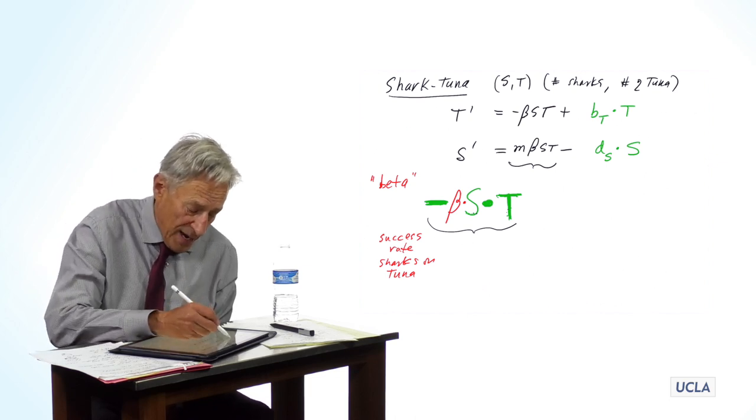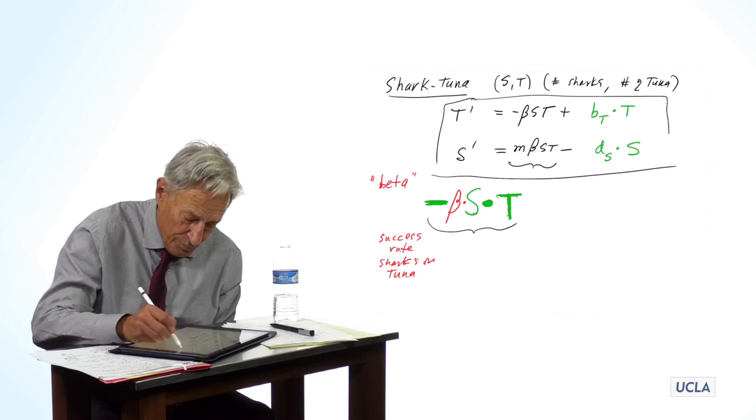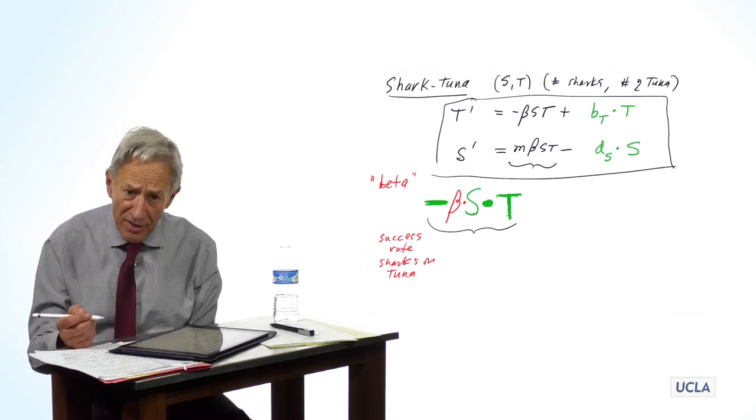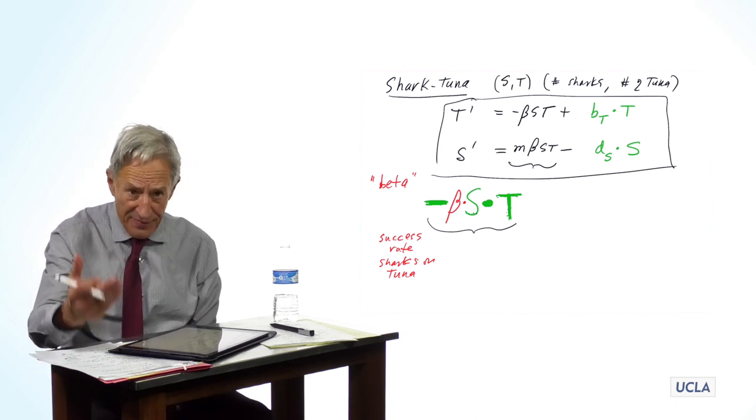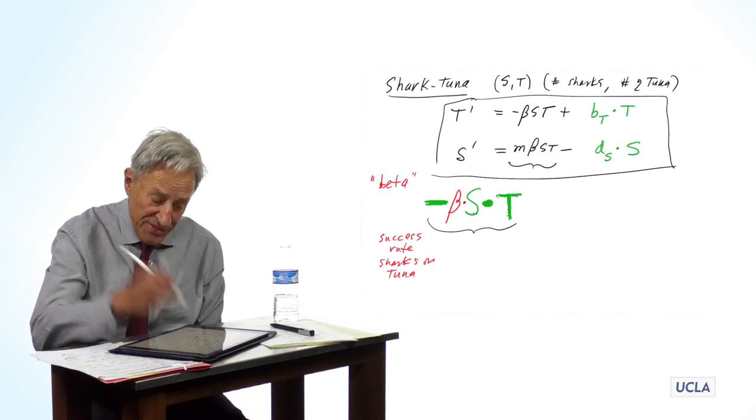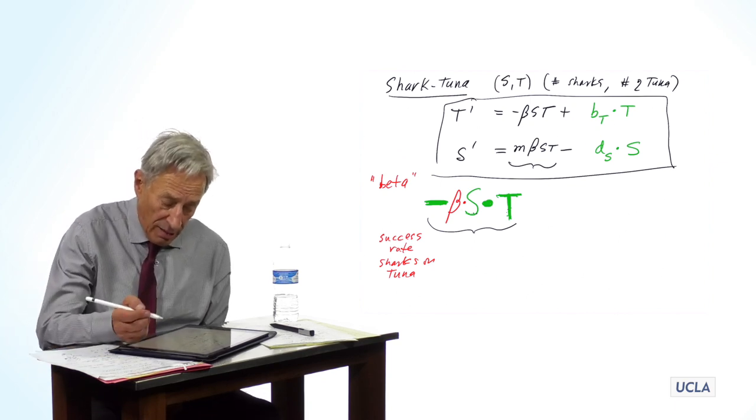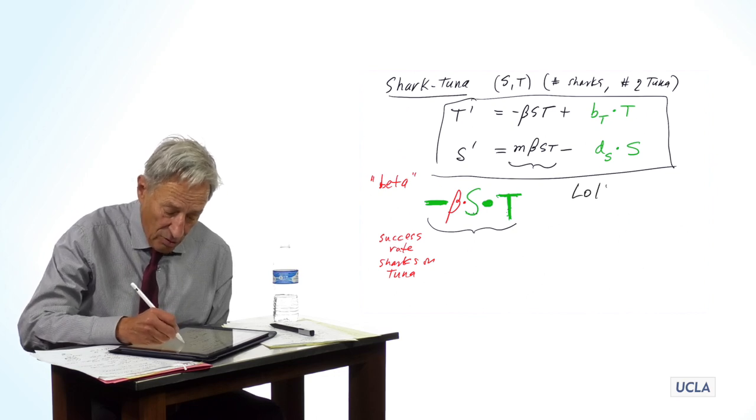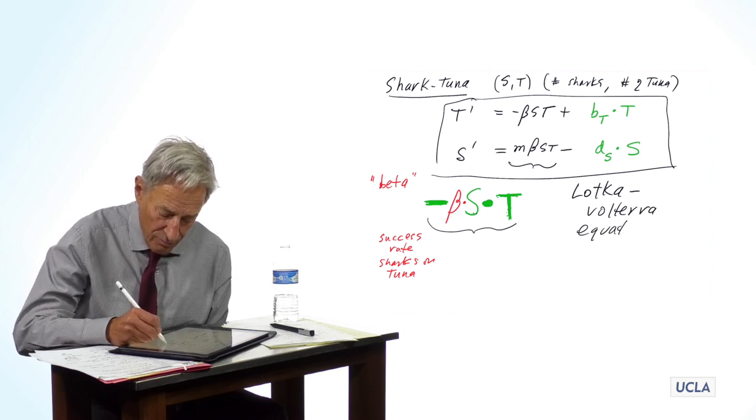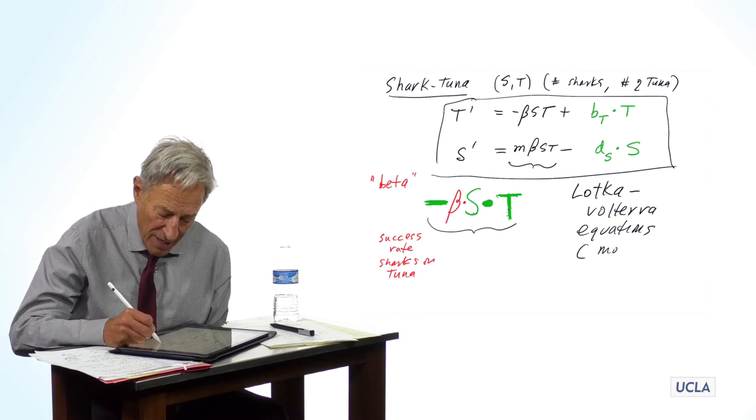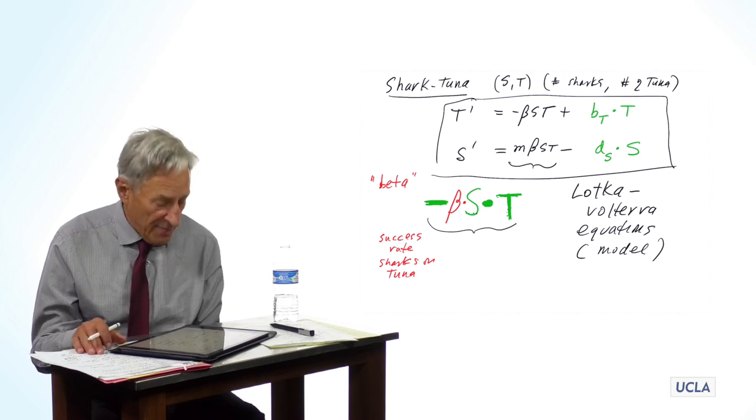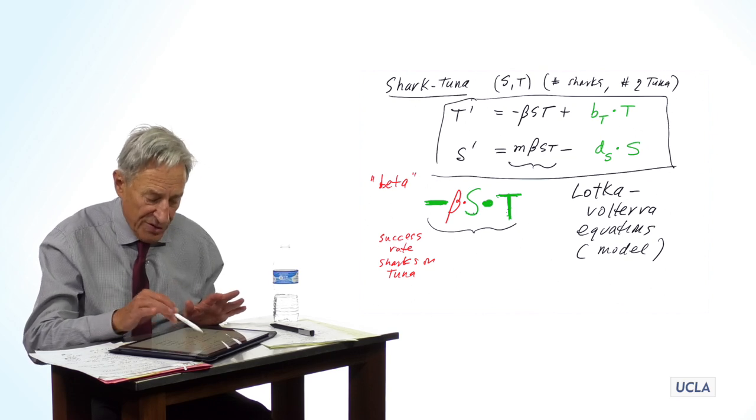So, now we have a model. There are four parameters in this model. We can set them from data. We can set them to nominal values to test the dynamics of the model. But this is a two-dimensional model. It actually has a name. These are called the Lotka-Volterra equations, or the Lotka-Volterra model. And there it is. It says that the amount of sharks and the amount of tuna will go up and down according to these quantities.